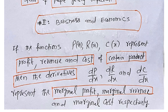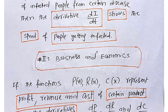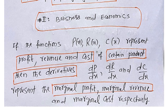If P, R, and C represent profit, revenue, and cost, then their derivatives represent the marginal profit, marginal revenue, and marginal cost functions respectively. Students of business and economics will know well what we mean by marginal profit, marginal revenue, and marginal cost. So unlike in mathematical biology where derivative acted as a rate of change or speed function, here it serves as a marginal function.